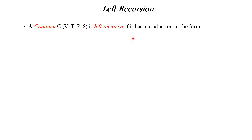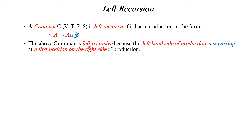A grammar is left recursive if it has a production of the form A → A alpha | beta. This grammar is left recursive because the left hand side of the production is occurring at the first position on the right hand side. Here, A is occurring on the left side as well as in the first position of the right side. This type of grammar is called a left recursive grammar.